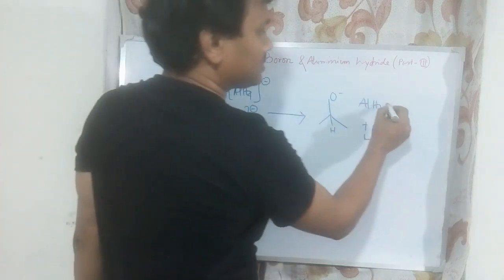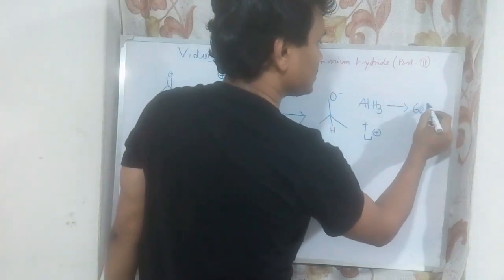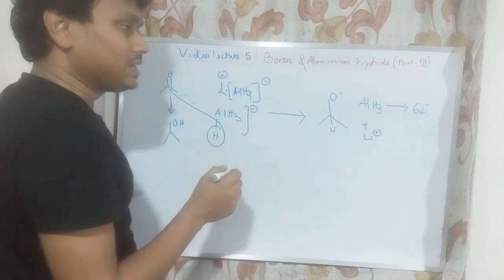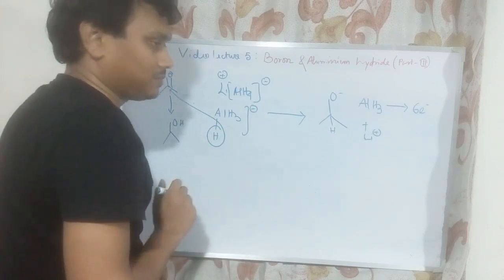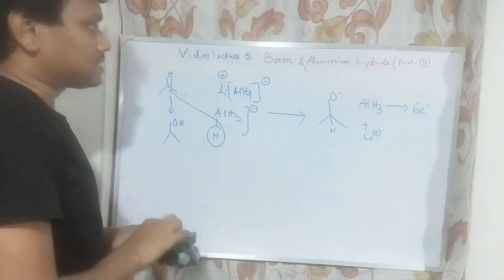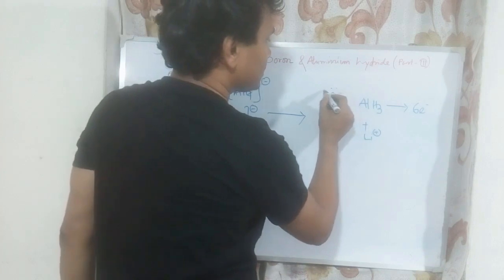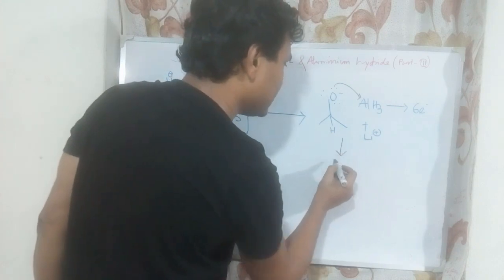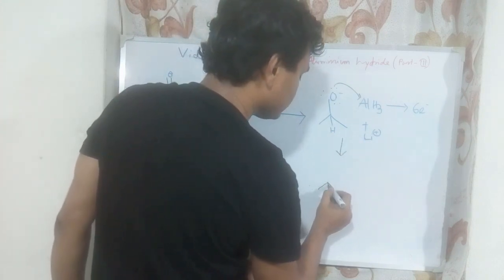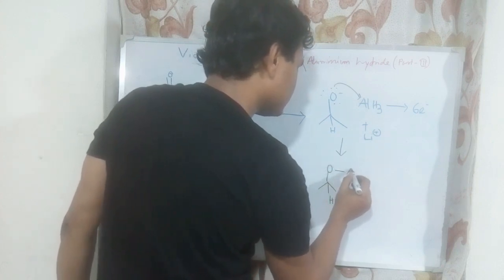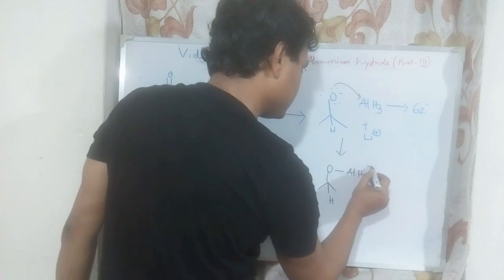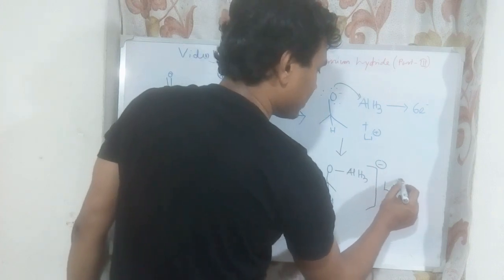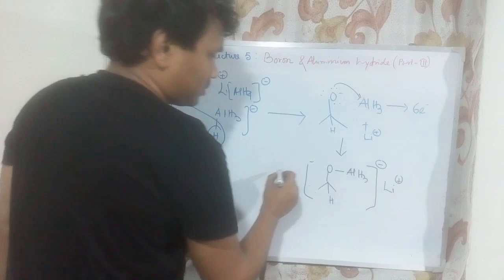AlH3 is a 6-electron species, so it has a sextet — it is electron deficient and a strong Lewis acid. It needs a Lewis base to get stabilized. In this medium, the alkoxide is a very good Lewis base. So it coordinates to the AlH3, resulting in an adduct formation. After this coordination, the formal negative charge goes on the aluminium atom, and lithium remains as a cation to counterbalance the charge.